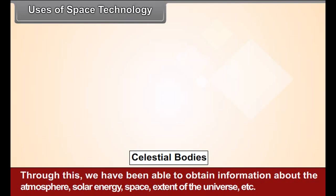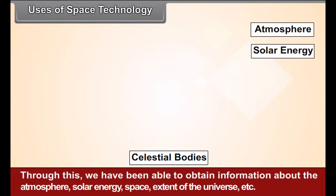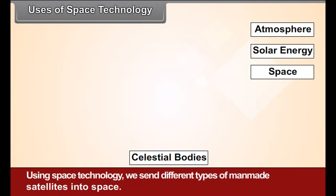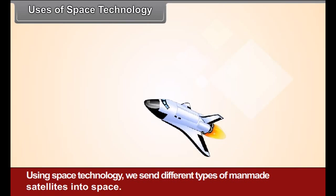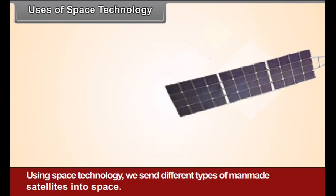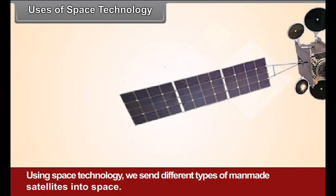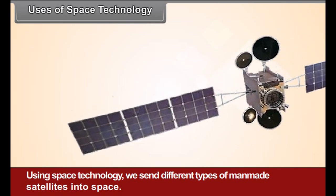Spacecrafts and space laboratories help us study the different celestial bodies in the solar system directly or indirectly. Through this, we have been able to obtain information about the atmosphere, solar energy, space, extent of the universe, and more. Using space technology, we send different types of man-made satellites into space.